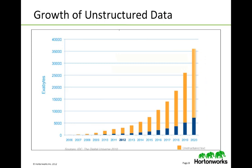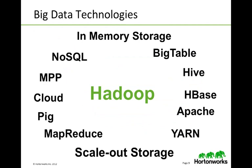A few years back, we talked in terms of megabytes and gigabytes. Now we're talking in terms of terabytes, petabytes, and exabytes of data, and the majority of that is coming in as unstructured. As that grows, more and more technologies are being built around dealing with that type of data — in-memory storage, Bigtable, NoSQL, MapReduce, HBase, YARN — all of these words tie to the concepts around Hadoop processing big data.